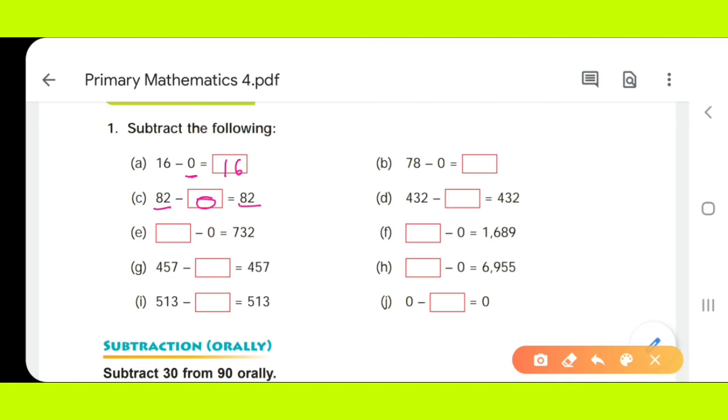Then here is E part. Dash minus 0 is equal to 732. So, how does 732 value come to 732? You don't have anything else. It means that you have 0 minused. So, you will get 732.